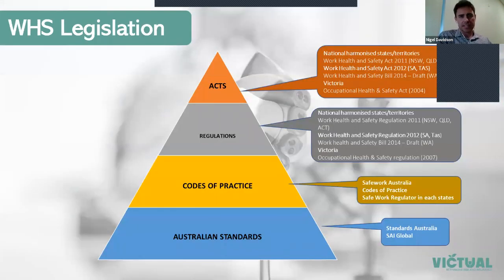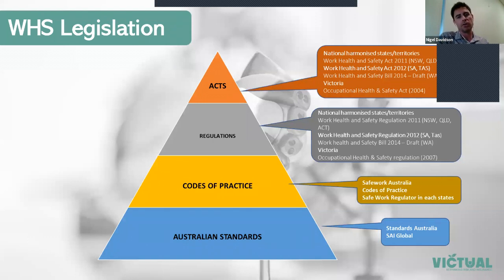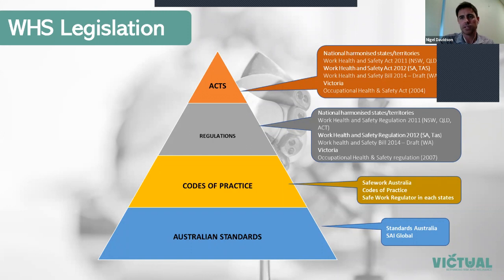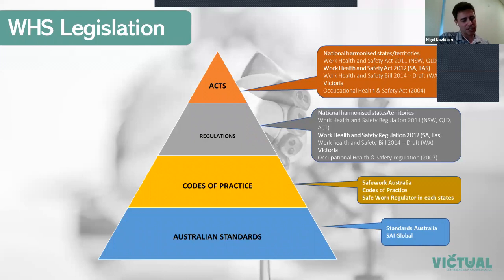Starting with WHS legislation — this is a pyramid framework. At the top you have the Health and Safety Act. Back in 2011, there was a big effort to harmonise legislation across Australia, because previously each state had their own legislation, creating more red tape for those managing national operations. The Act covers high-level duties as an organisation and touches on penalties. Most states and territories are now on board with the harmonised legislation.